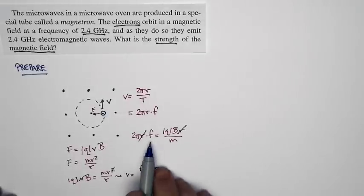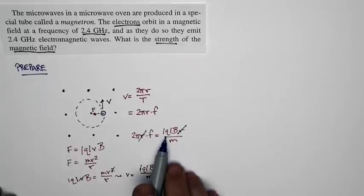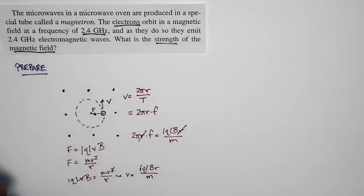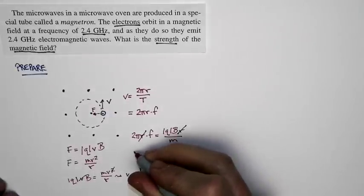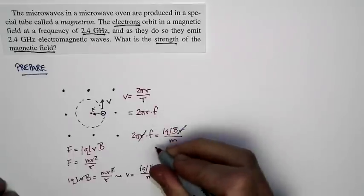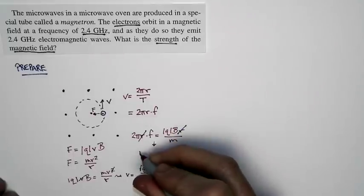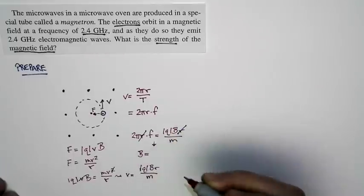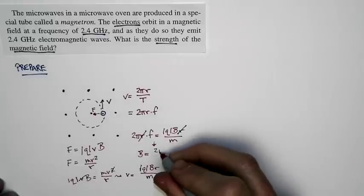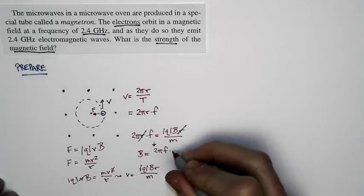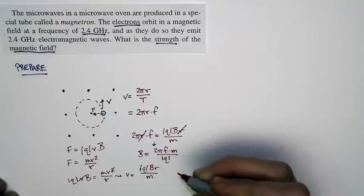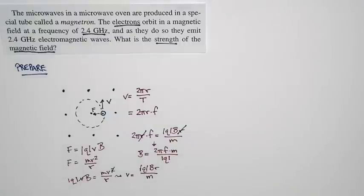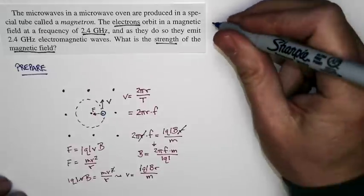All I'm left with is the frequency, which I know, the charge, and the mass, which I know because it's an electron, and the magnetic field, which is what I'm trying to solve for. And if I do that, if I take this relationship and solve it for the magnetic field, I get this: the magnitude of the magnetic field is equal to 2 pi times f times m divided by the magnitude of the charge. And with that, we're ready to solve.